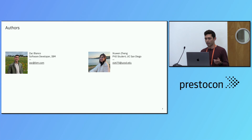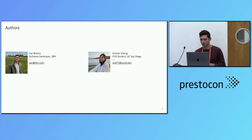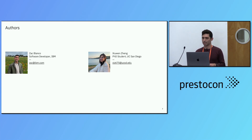She worked on this project with me during her summer internship with the Presto optimizer team at IBM. She's a fourth year PhD student in the CSE department at UCSD, advised by Amarnath Gupta and Arun Kumar, and she researches polystore databases and machine learning databases for machine learning systems.